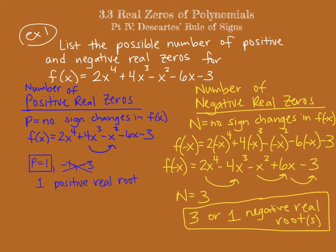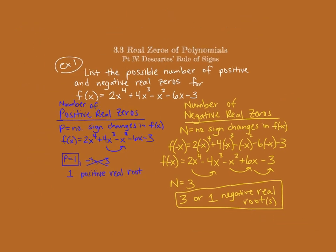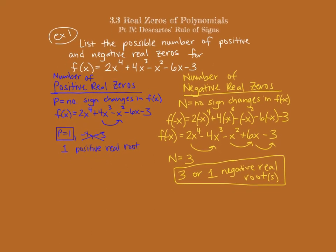Let's think about how this relates to the Fundamental Theorem of Algebra. The degree of our polynomial is 4, so we have 4 total roots. Roots can be real or imaginary, and imaginary roots come in pairs. If all 4 roots are real, we'd have 1 positive real root and 3 negative real roots. If only 2 roots are real, then 1 would be positive and 1 would be negative, with the other 2 imaginary. There's no chance all 4 are imaginary, because Descartes' rule tells us we have to have 1 positive real and either 3 or 1 negative real roots.